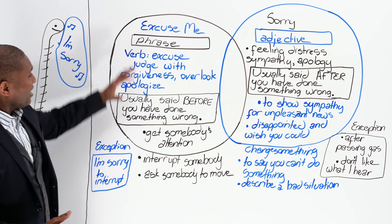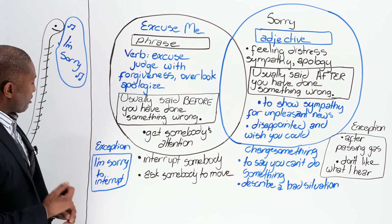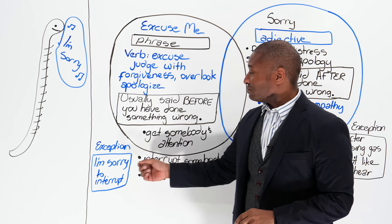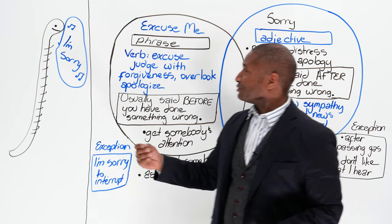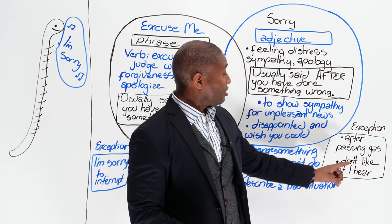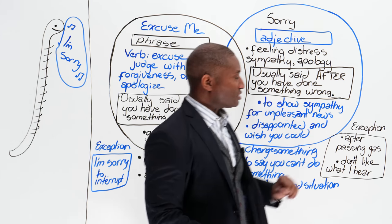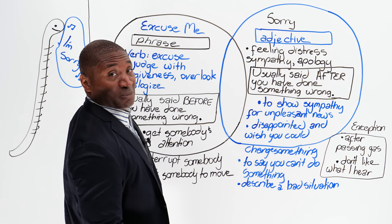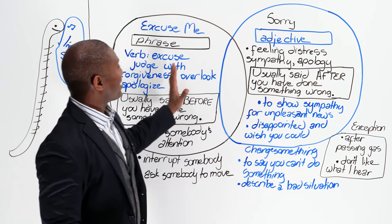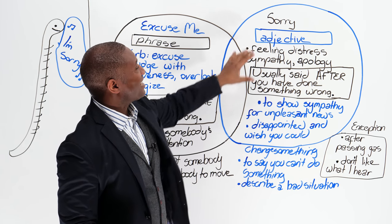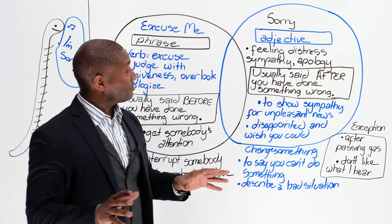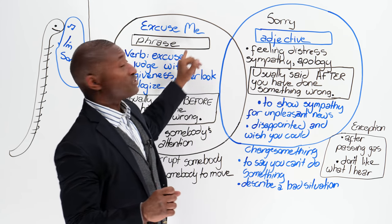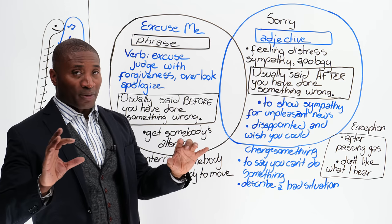So we've got all that for excuse me. Now there are some exceptions I'll come back to. Let's go over to sorry — seeing as I started there, I'm sorry I did. Sorry is an adjective, so right off the bat we can see that an adjective is different than a phrase, so even in the formation they're different.